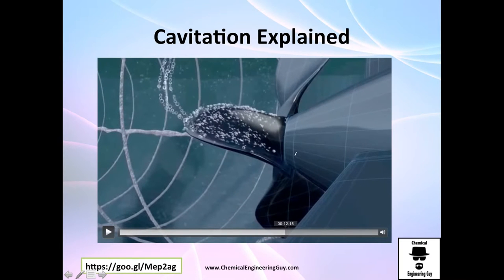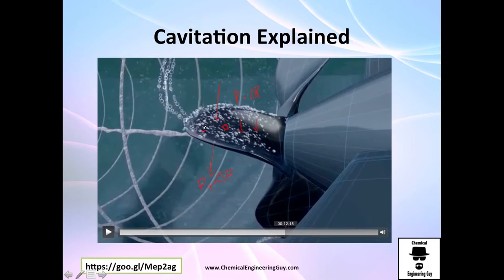As the blade moves, one side has pressure P plus ΔP and the other side has pressure P minus ΔP. The low-pressure side will lower the local boiling point. When you have low pressure, you have a lower boiling point, and if the fluid temperature meets that reduced boiling point, you generate vapor — so once again, these are not air bubbles, these are water vapor bubbles.